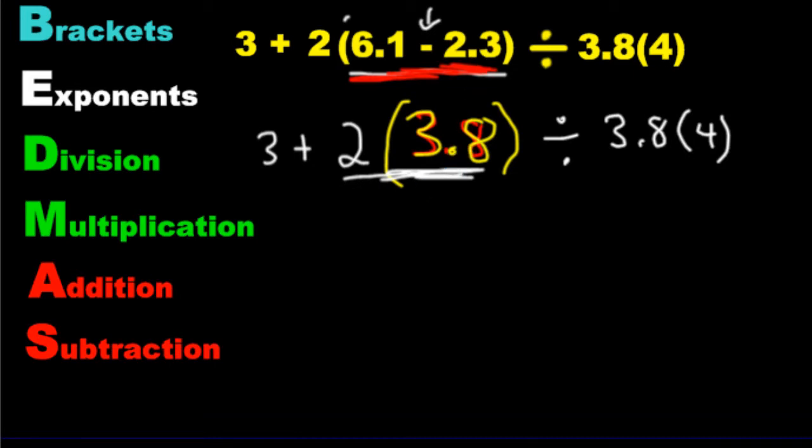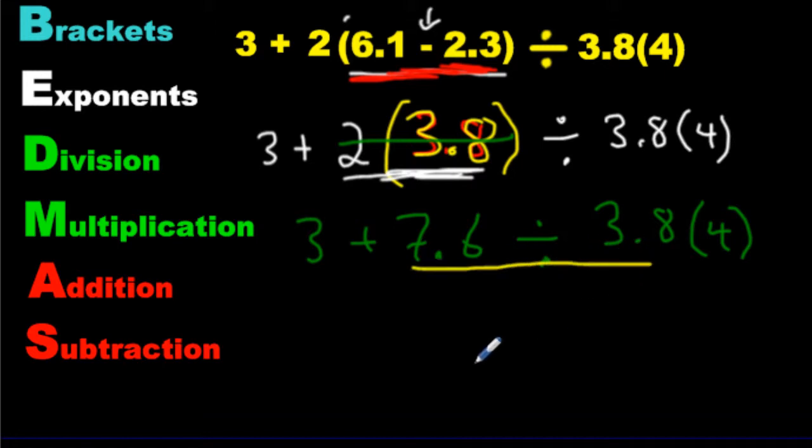So we're going to do the multiplication first. And if we multiply these, what are we going to get? We are going to get 7.6. So write 7.6. I'm done with this one. Now I write everything else beside it. Go ahead and do that. Division goes here. We have a 3.8 bracket. And we're going to multiply that by 4. Okay, now what's next? Okay, we're not done the division multiplication. There's still more division multiplication. Division is next. So we will solve it.